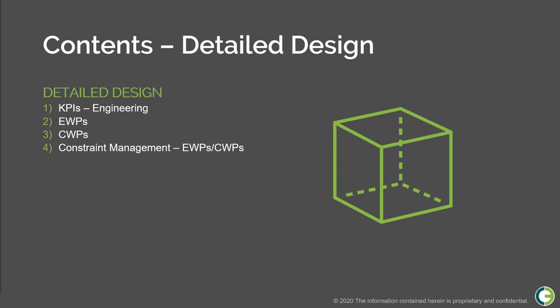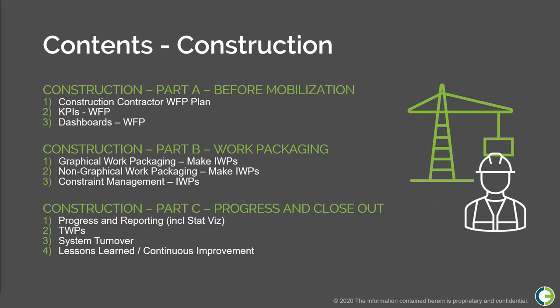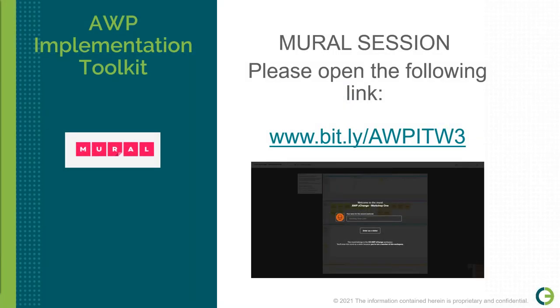As a refresher, the proposed detailed design content includes: engineering KPIs, what an EWP should be, what a CWP should be, and constraints on both packages. For construction: the contractor's workface planning plan, work packaging KPIs, dashboard design, graphical and non-graphical work packaging, constraint management at the IWP level, progressing and reporting, test work packages, system turnover, and lessons learned. A Mural link is available on screen and in the chat — click to open in your web browser while keeping the meeting audio open.